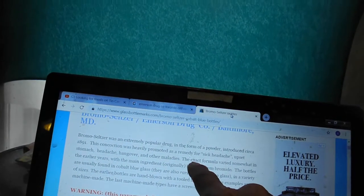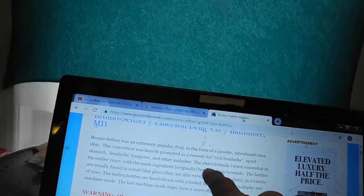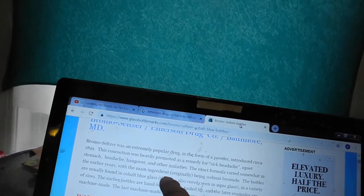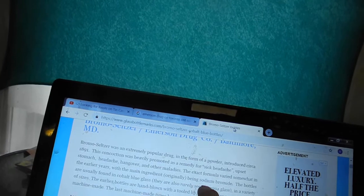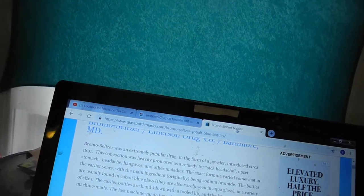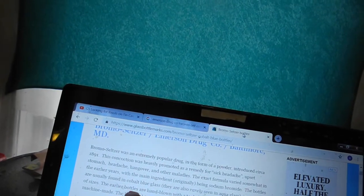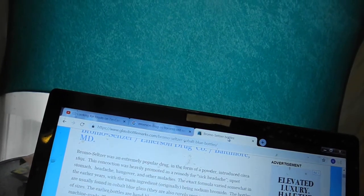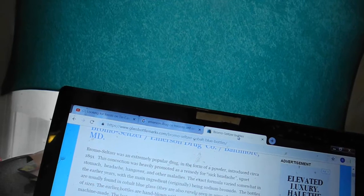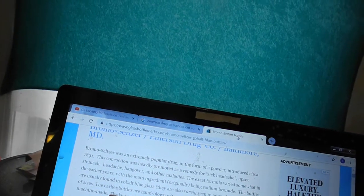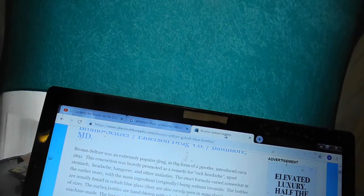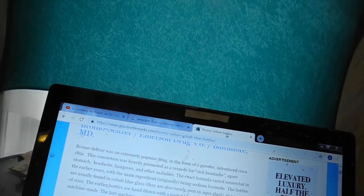Well, time sure changed. The exact formula varies somewhat in the early years with the main ingredient originally being sodium bromide. The bottles are usually found in cobalt blue glass. They are rarely seen in aqua glass in a variety of sizes. The early bottles are hand blown with a tooled lip and the later examples are machine made.